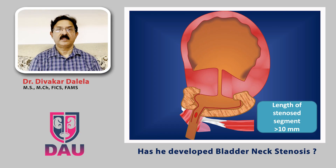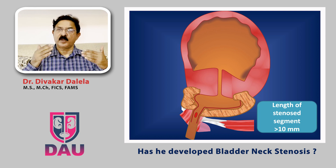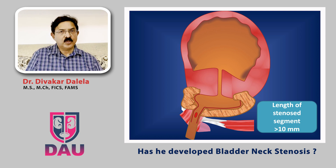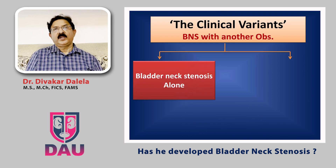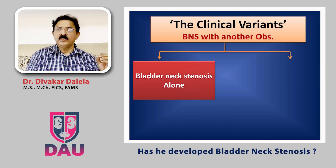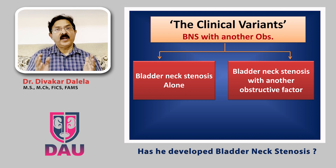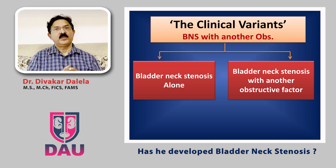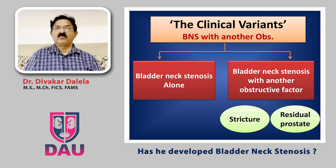This is the third situation where the vertical length of the stenotic segment is longer than a centimeter — it does not involve the bladder neck alone but also involves the proximal prostatic urethra. Clinical variants can therefore be many: you can have bladder neck stenosis alone, or you can have bladder neck stenosis combined with another obstructive factor in the lower urinary tract — either a stricture or residual prostate. You have to diagnose everything and then treat the patient accordingly.